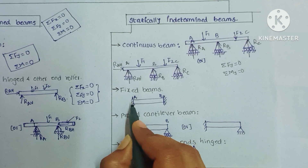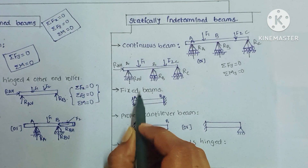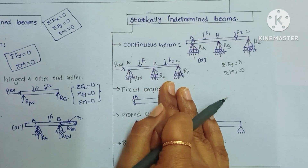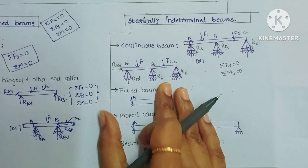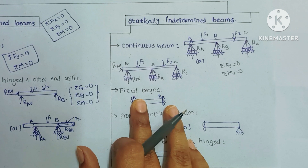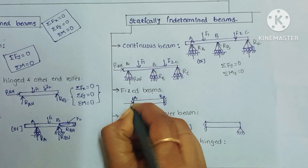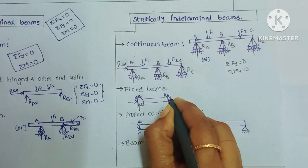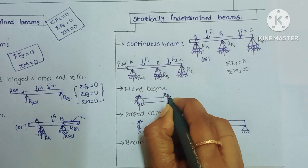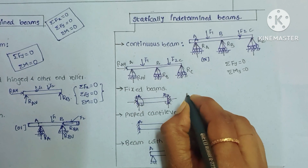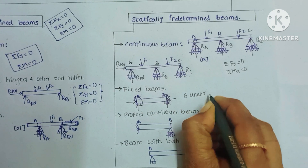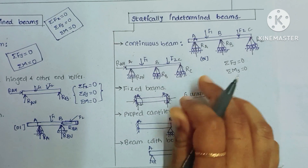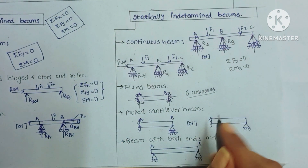The second type of statically indetermined beam is the fixed beam — both ends are fixed. In a cantilever beam, only one end is fixed and the other is free. If both ends are fixed, it is called a fixed beam. Each fixed end has horizontal, vertical, and couple moment reactions — three unknowns per end — giving a total of six unknowns. Six unknowns cannot be calculated using three equations, so this comes under statically indetermined beams.